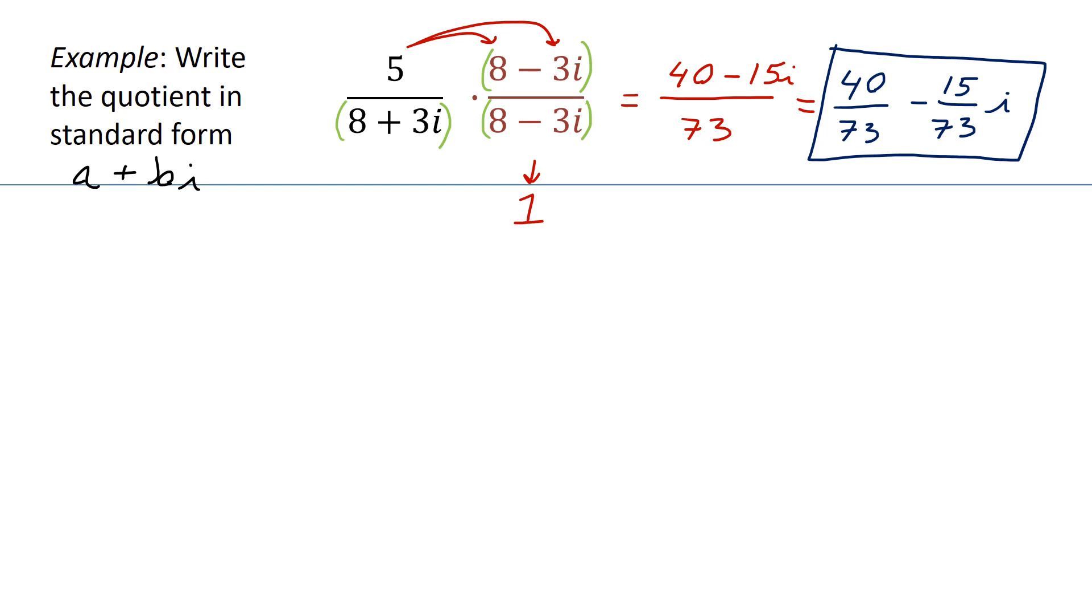Move on to another example. We have 2 plus i in the numerator being divided by negative 4 plus 3i. The complex conjugate of negative 4 plus 3i is negative 4 minus 3i. When you do these problems, I would recommend taking the time and multiplying the numerator somewhere else and then multiply the denominator somewhere else.